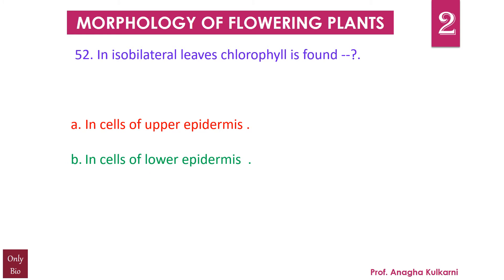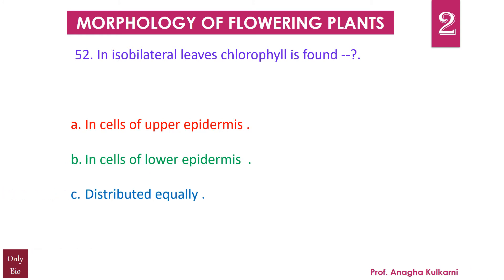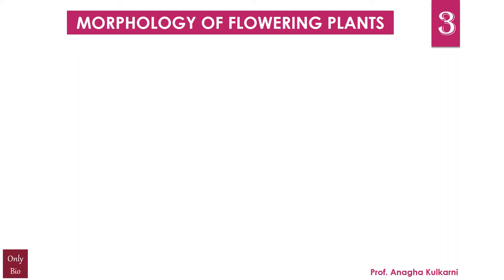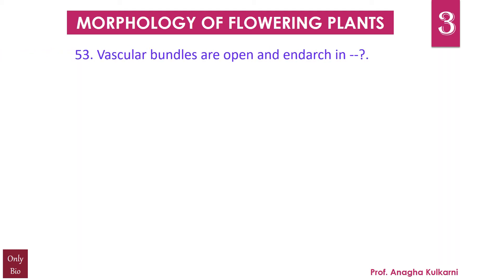Question number 52: In isobilateral leaves, the chlorophyll is found — a) in cells of upper epidermis, b) in cells of lower epidermis, c) distributed equally, d) absent. The correct answer for this question is c) distributed equally. So in isobilateral leaves, chlorophyll is found distributed equally.